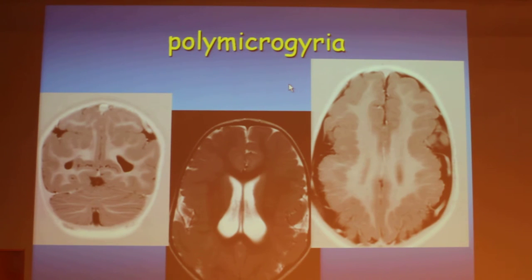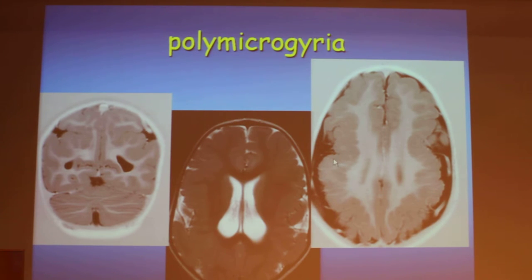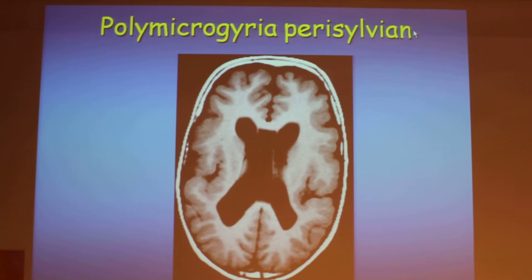Sometimes it's not easy to appreciate because it looks like a very thick gray matter cortex, but if we look closely into it, we'll see that it is composed of many small gyrations. It can be perisylvian — in this case, it's perisylvian polymicrogyria.